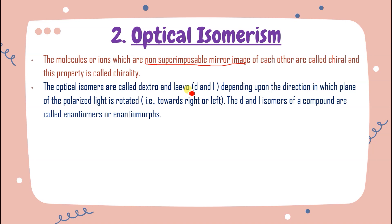Depending upon the direction in which the plane of polarized light is rotated: if the PPL rotates to the right side, the compound is called dextrorotatory; if the PPL rotates to the left side, it is called levorotatory. The D and L isomers of a compound are called enantiomers or enantiomorphs.